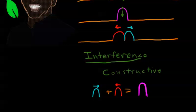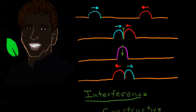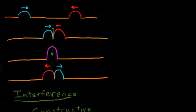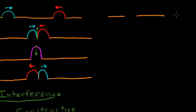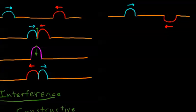Now let's do a slightly different example. Sal takes his string and jerks one end up and back down, creating his friendly blue wave pulse moving to the right. But this time I do something different: I jerk my end down before I jerk it back up, so I end up with a wave pulse where the bits of string are moving in the opposite direction to the bits of string in Sal's wave pulse.